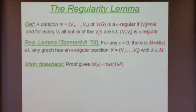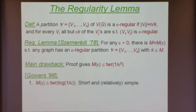People thought that this shouldn't be the correct bound — it should be like 2 to the 2 to some polynomial in 1 over epsilon. But surprisingly, Gowers proved that this tower-type dependence is indeed the correct order. In his famous paper, he gave two proofs. The first showed that M of epsilon grows like a tower function of 1 over epsilon, but only of height logarithmic in 1 over epsilon, which already meant that any application of the regularity lemma is only of theoretical nature.